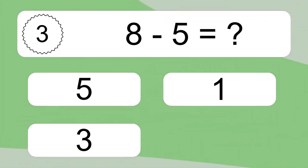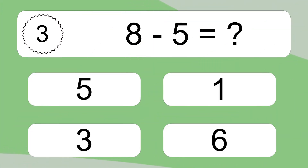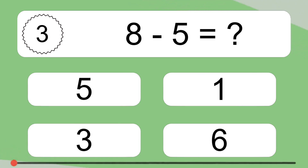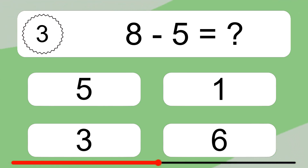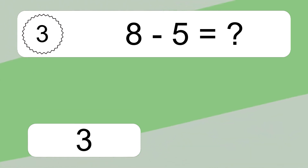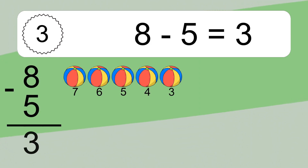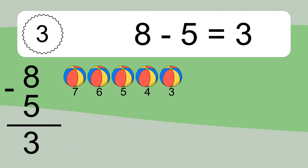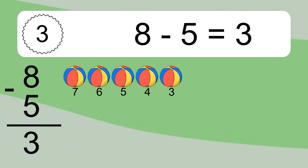8 minus 5 equals what? 8 minus 5 equals 3. Let's count it: 7, 6, 5, 4, 3.